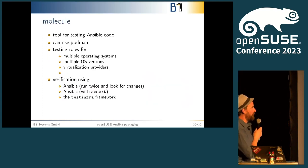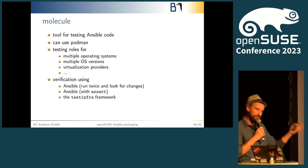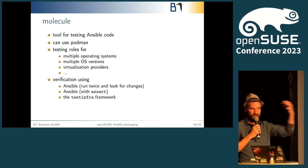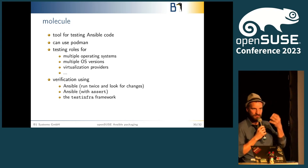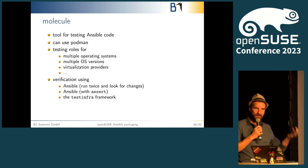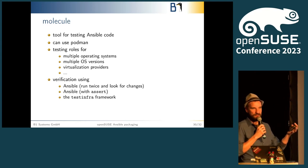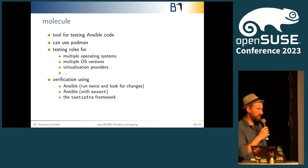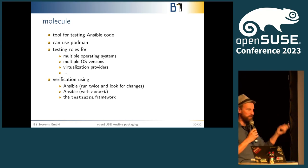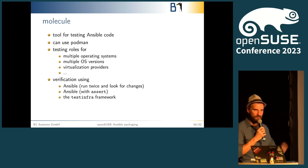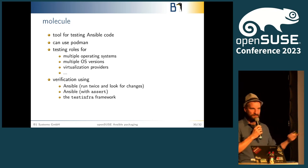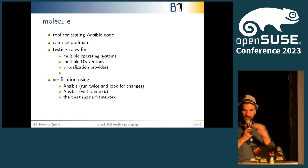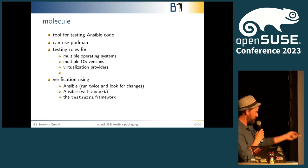Finally, Molecule. Molecule uses Podman or Docker to spin up containers and have them managed by Ansible, which is really helpful for testing if your role behaves as it should — if your role targets Debian and OpenSUSE and you want to add Fedora and Alpine Linux. You can test multiple operating systems and OS versions, test different virtualization providers, and verify using Ansible. Run it twice to check idempotency. You can use assert tasks to make sure the package is installed after the first run, and there's a test infra framework for testing.